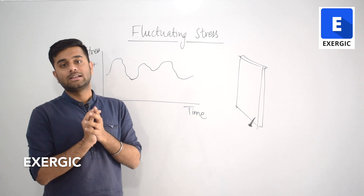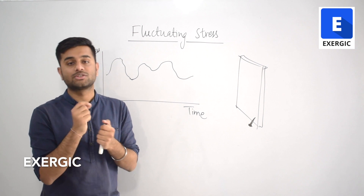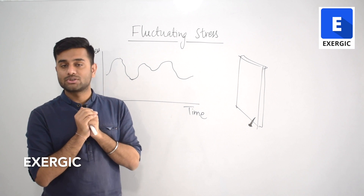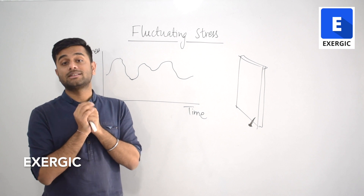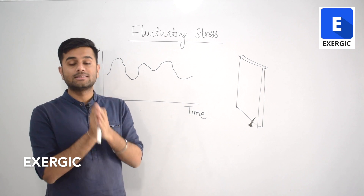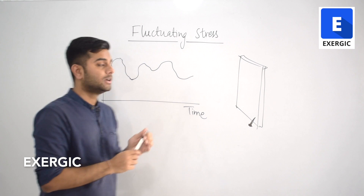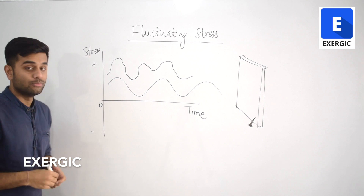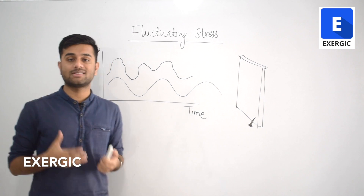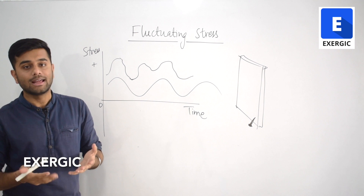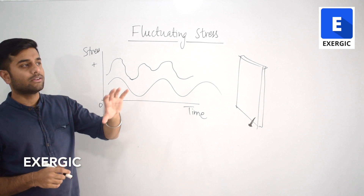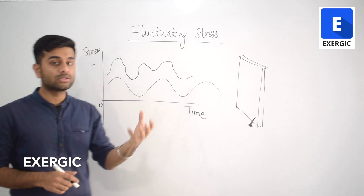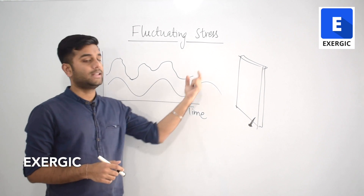What we do is take some assumptions and approximations to analyze the fluctuating stresses. The approximation we make is that we consider the variation of stress with time to be sinusoidal. We assume, to make the whole approach simpler and so that we can analyze it, that whatever are the fluctuating stresses and whatever the variation in stresses with time, those are going to be sinusoidal variations.